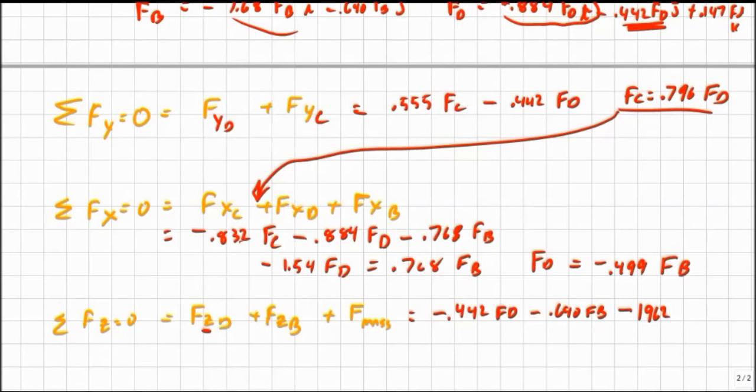And if I substitute this into here, so I just have two terms of F B and a constant, I can solve for F B and I get F B equals minus 4570 Newtons.